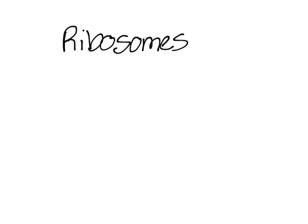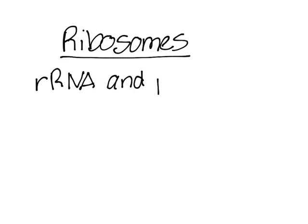Ribosomes are made up of rRNA and protein. There are three types of RNA: mRNA, rRNA, and tRNA, and we'll get into all of that later on more specifically.